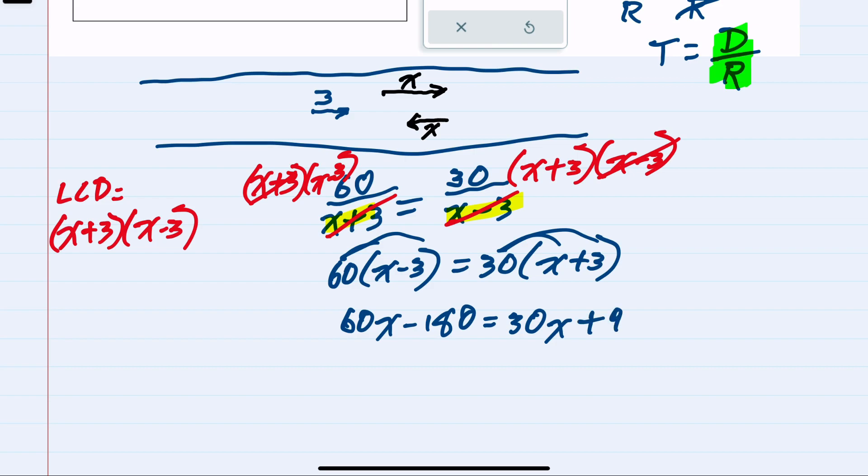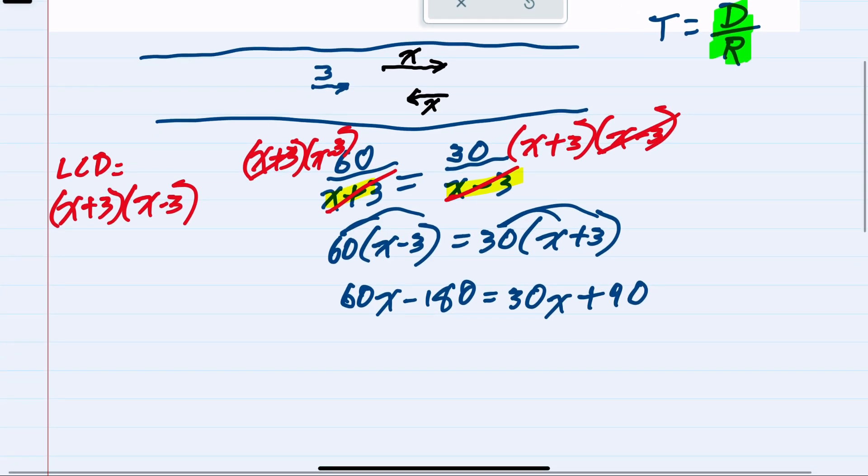Now getting the X's on the same side, I can subtract this 30X from both sides, eliminating it on the right. I now have 60X minus 30X, which is 30X minus 180 on the left, and 90 on the right.